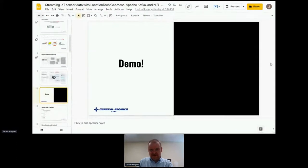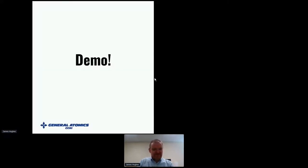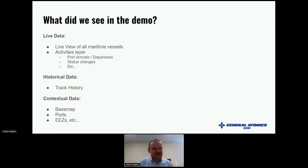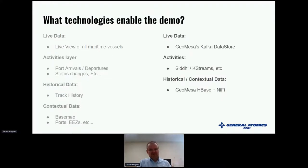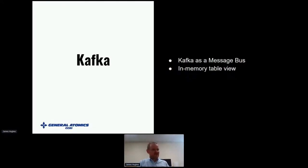Let me get back to present mode and chat through how GeoMesa and those technologies enabled what we saw. The live data came from GeoMesa Kafka data stores and the activities layer. There was also a ports layer as a shapefile and base maps. NiFi helps us move data around in the system. So let's dive into how we use Apache Kafka.